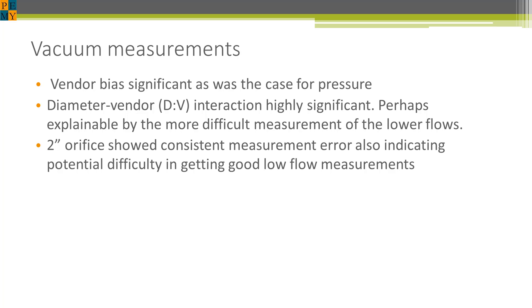First, the diameter vendor interaction was highly significant here, whereas it was not under the pressure mode. This most likely has to do with the measuring apparatus or the way the measurements were made. There was also a systematic type error in the measurement of the 2-inch orifice that also probably has to do with the inability to get good measurements at the small orifice flows.